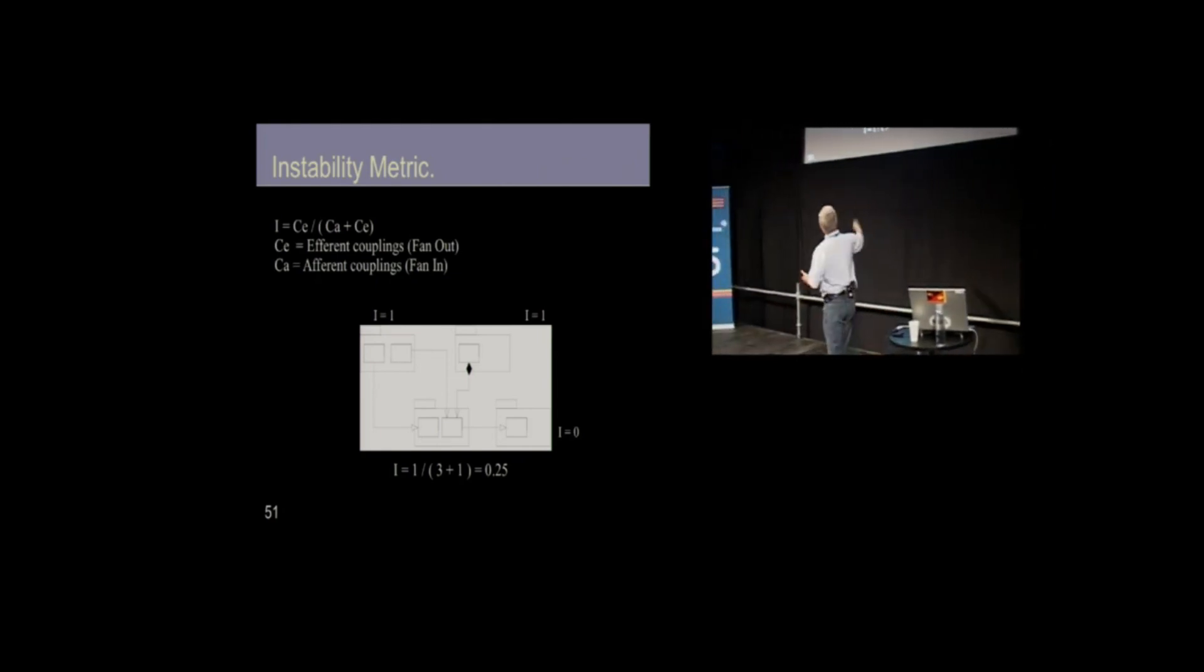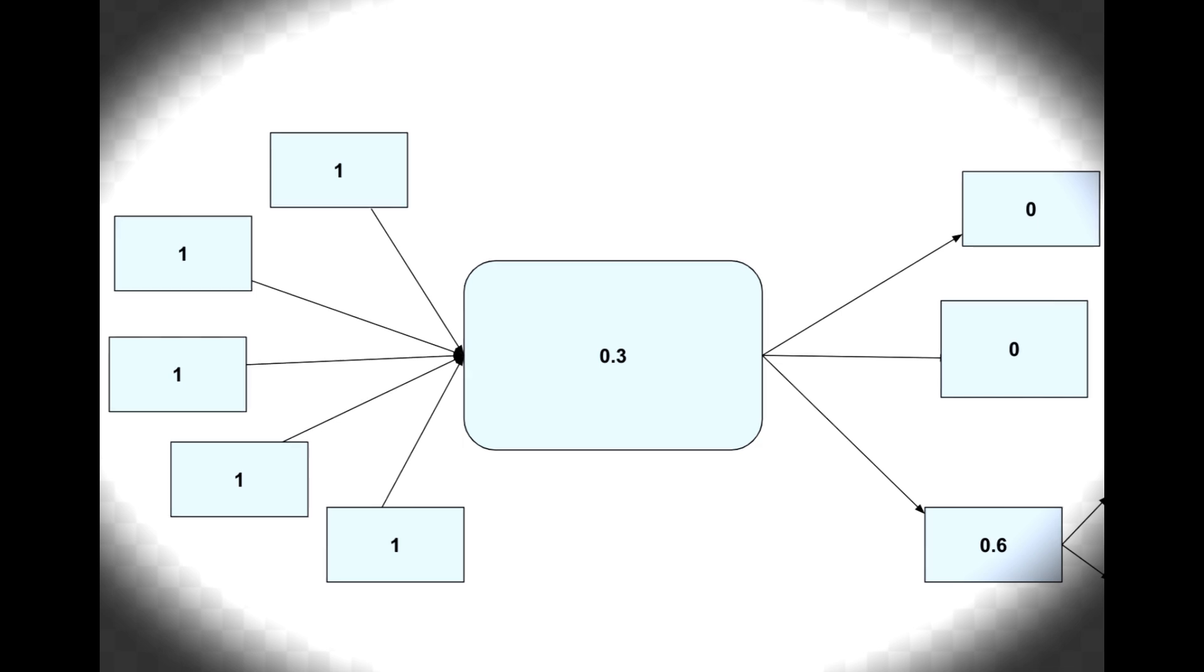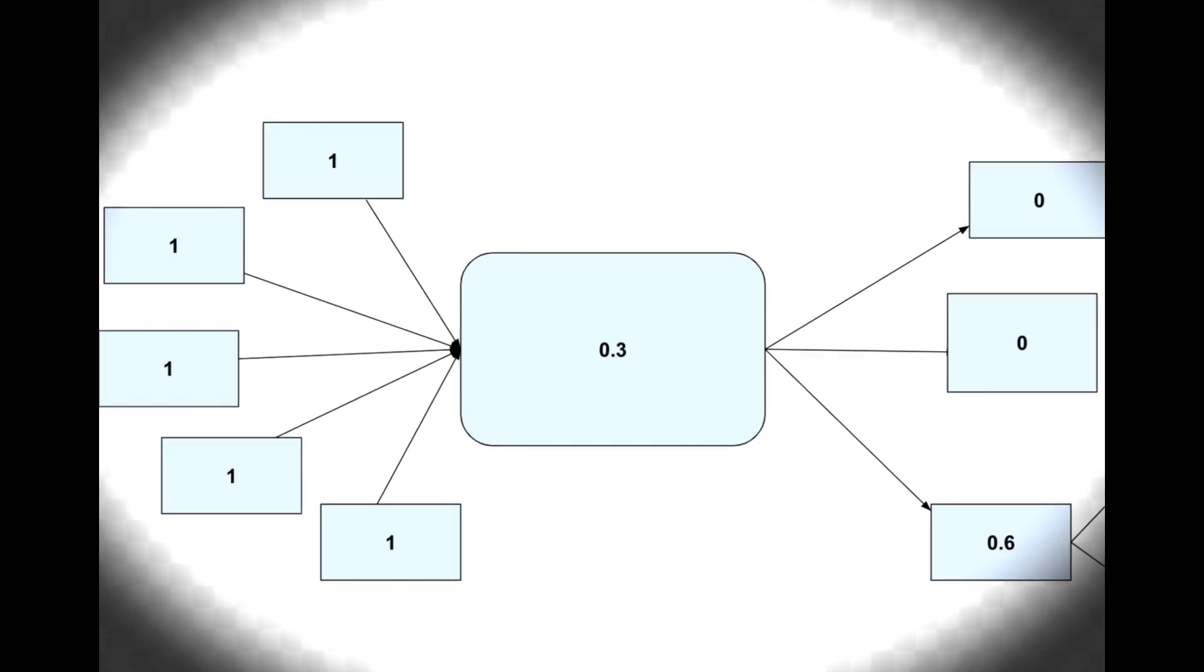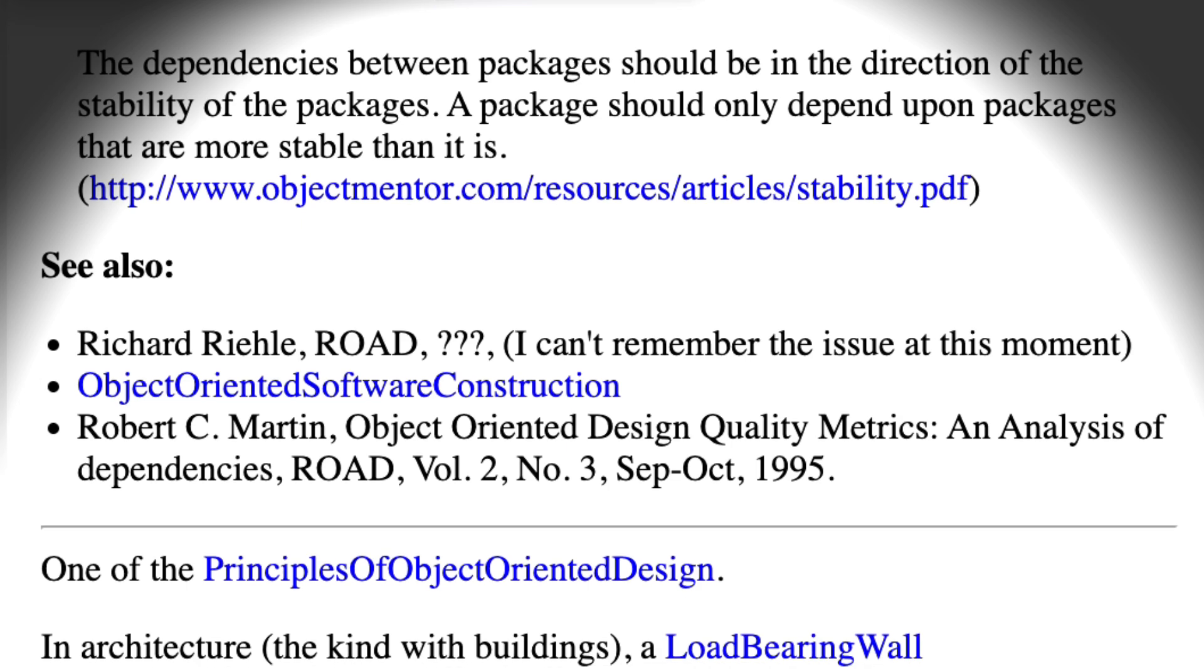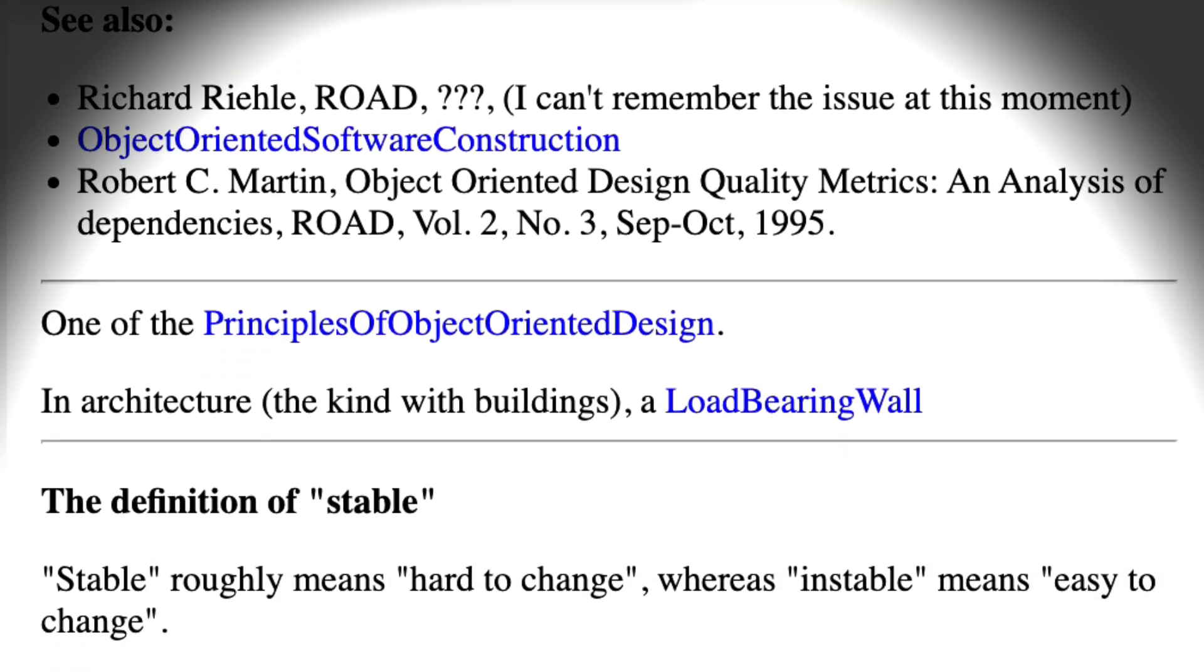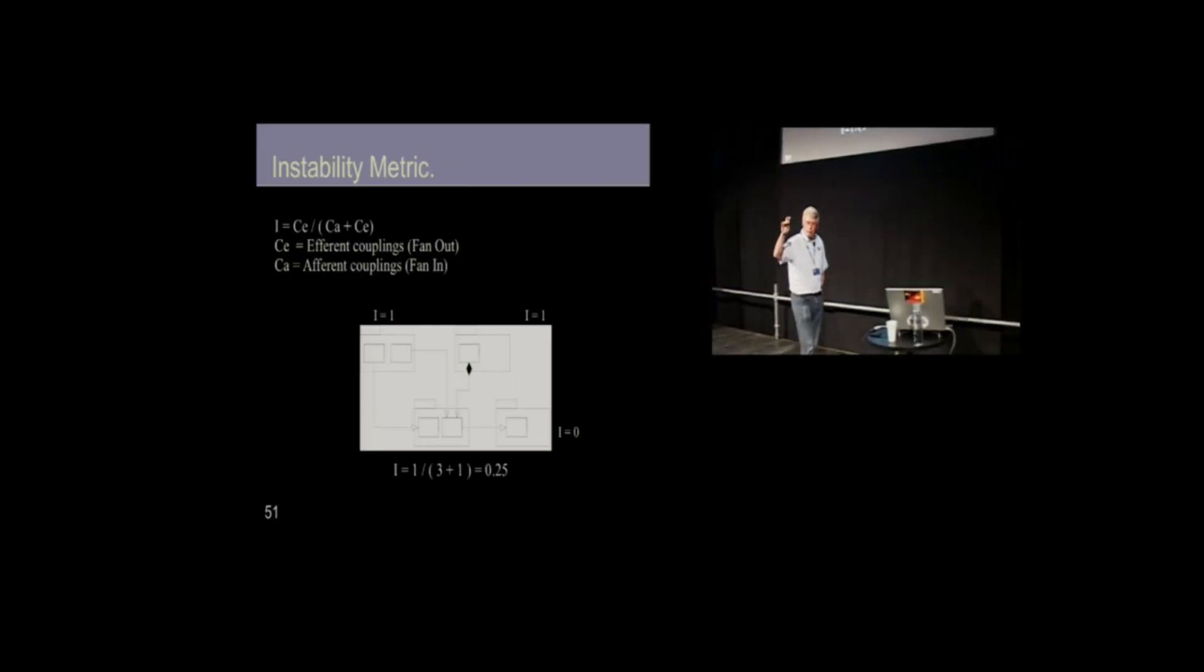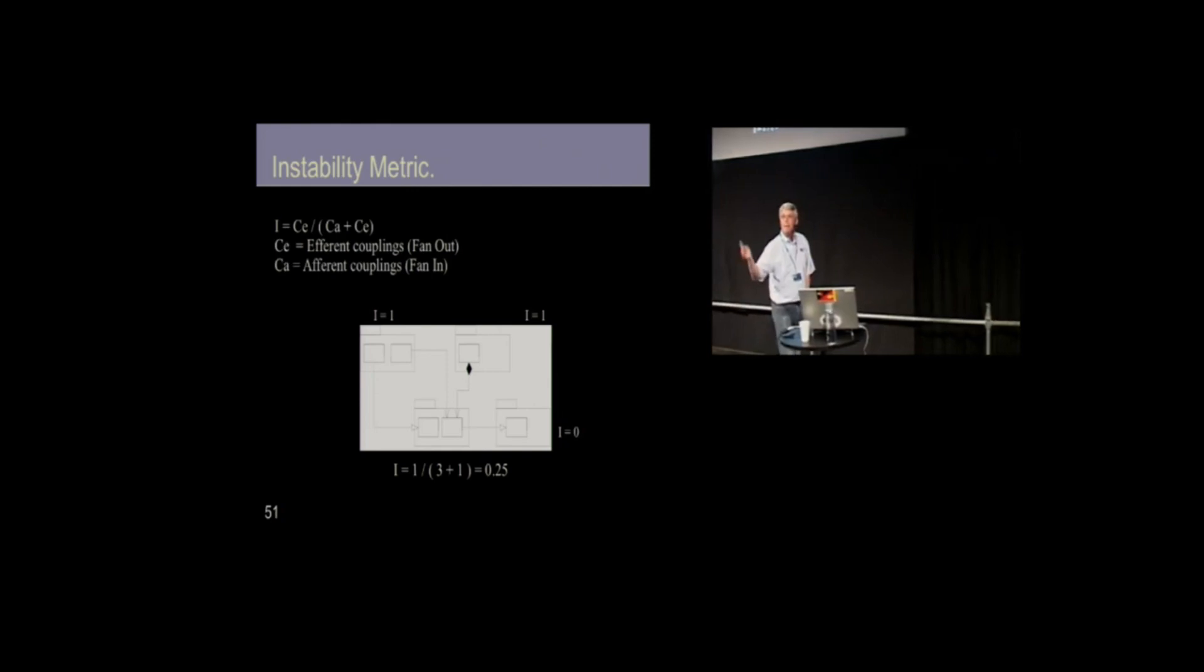And we can do this math for all of our components. And then we have a very simple rule. The stable dependencies principle says, depend in the order of decreasing I. Every component that depends on another component should depend upon one that has a lower I metric than it does.